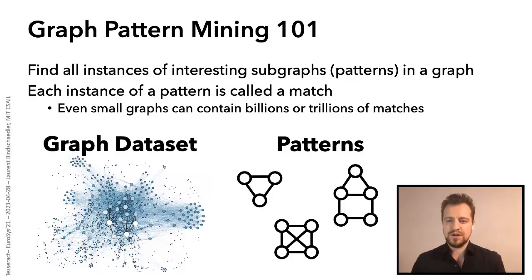We're going to talk about graph pattern mining. In short, graph mining aims to find instances of interesting subgraphs, which are called patterns, in a graph dataset. Basically, our goal is to enumerate all instances of the pattern within the graph, where each instance of the pattern is called a match. One thing to note is that graph mining is quite different from graph analytics problems like PageRank or connected components. In particular, what's unique about graph mining is the fact that there is significant intermediate data. Even for small graphs with a few million vertices, you can actually end up with billions or trillions of matches.